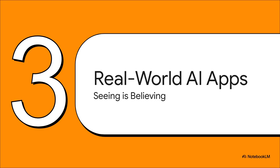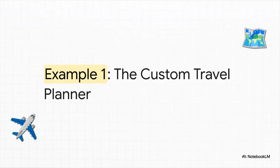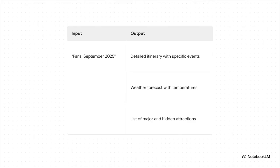Let's dive into some actual real-world apps that people have built with Opal. First, a custom travel planner — something pretty much all of us have struggled with. The input is so simple it's almost funny: 'Paris, September 2025.' That's it. But look at the output — it's an absolute powerhouse. You get a detailed itinerary with actual events, a weather forecast, and a list of not just the major attractions, but hidden gems too. All of that from just three words.